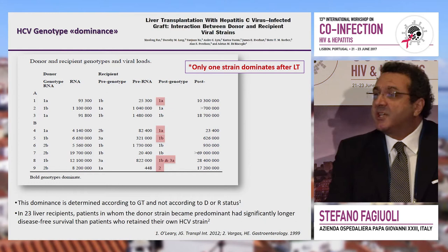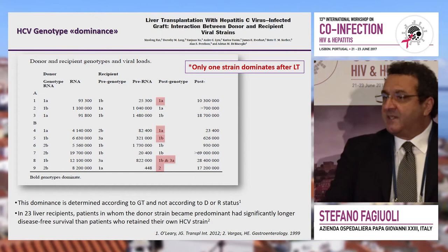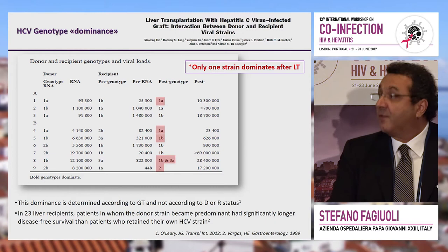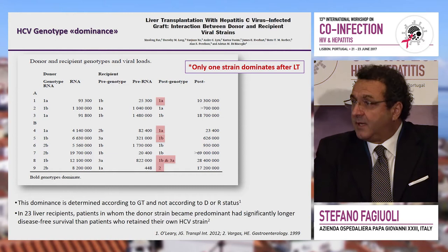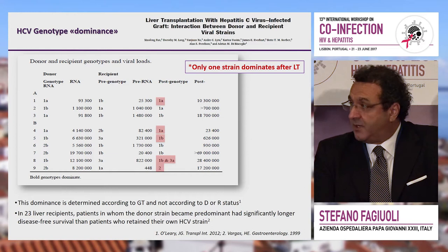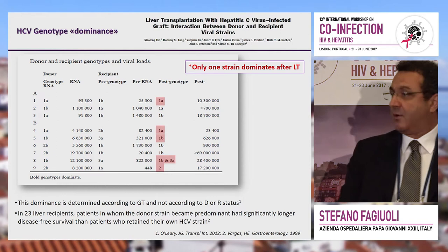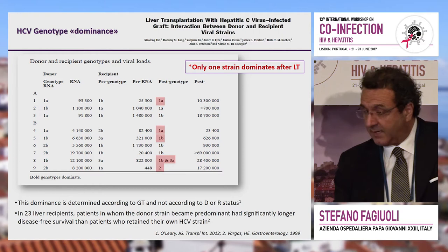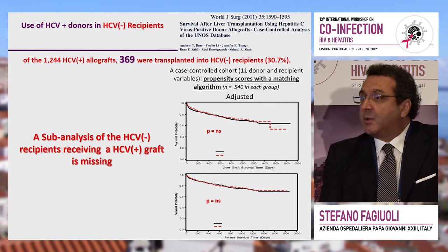Regarding genotype, just one genotype will dominate after transplant. In one series, 6 out of 9 grafts acquired the donor's genotype. In another study, the 23 liver recipients who actually acquired the new genotype did better compared to those who remained with their own genotype. It is all interesting but largely speculative, because with the new drugs it is no longer going to be a major problem.